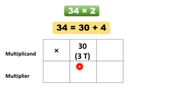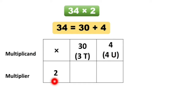So: 30 means 3 tens, aani ithe 4 — 4 means 4 units. Aani ikda yaha box madhe multiplier write karechai, so 2. Mula no, aata multiplicant aani multiplier aaplel zaggye var theo lelia hai. Aata purji step kaya hai: aata 2 nene 3 tens la multiply karechai. 3 tens manje kai hai? The 30.